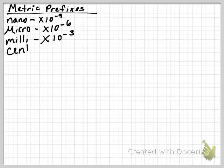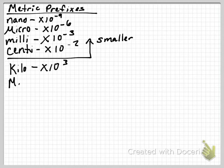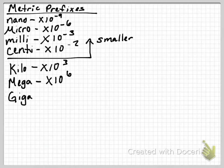And centi, which is times 10 to the negative second. Those are all smaller than our base unit, whether we're using meters, kilograms, or seconds. Then we'll go into things that are larger, like kilo, which is times 10 to the third, and mega, which is times 10 to the sixth, and giga, which is times 10 to the ninth. They are all larger than our base unit — meters, kilograms, or seconds.